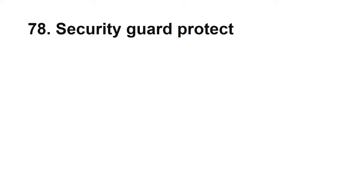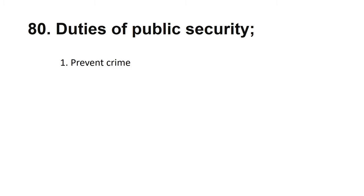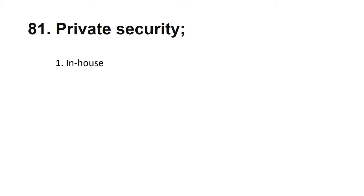The security guard protects people, property, and information. There are two major practices of security: public security — police, military, or other law enforcement agencies; and private security — private security guards or private security companies. Duties of public security: prevent crime, detect crime, apprehend offenders, and enforce law where appropriate. Private security has two types: in-house security, where a company hires its own security guards; and contract security, where a company contracts with a private security firm to supply personnel.